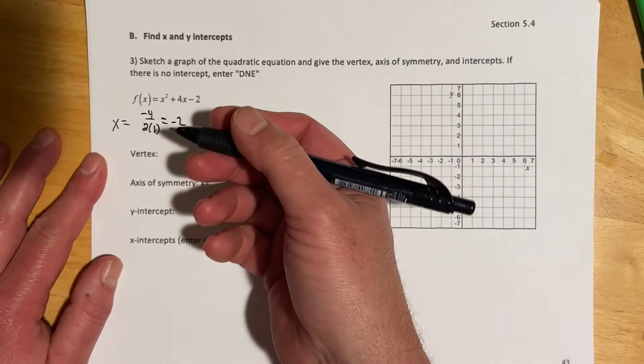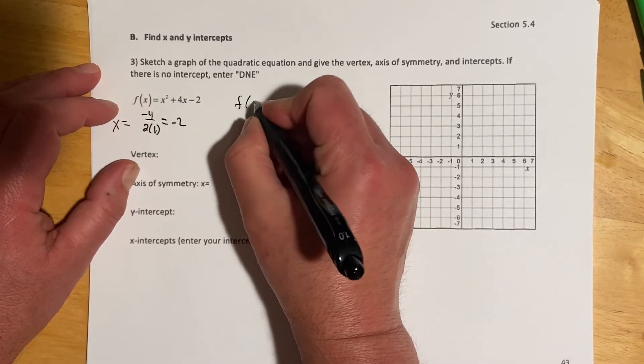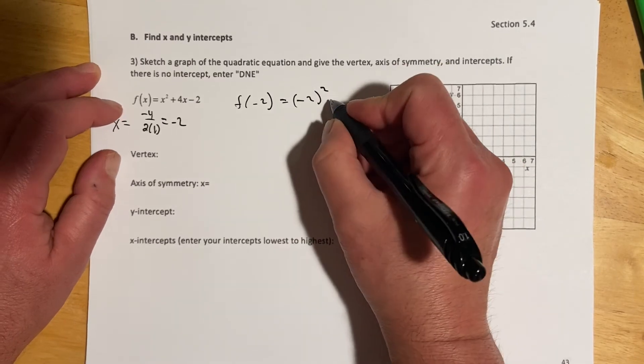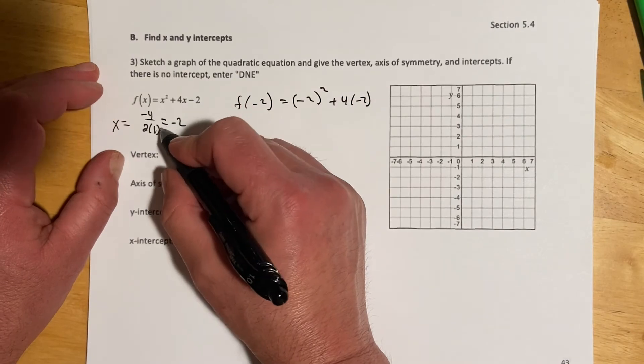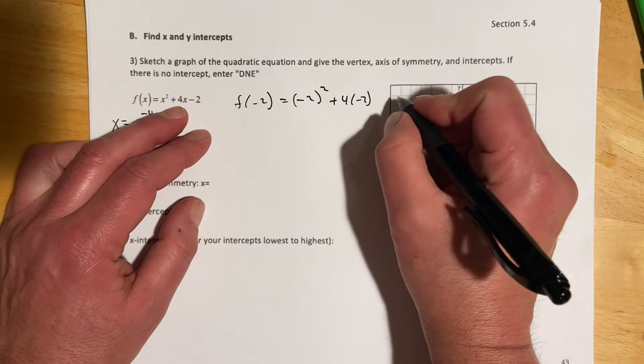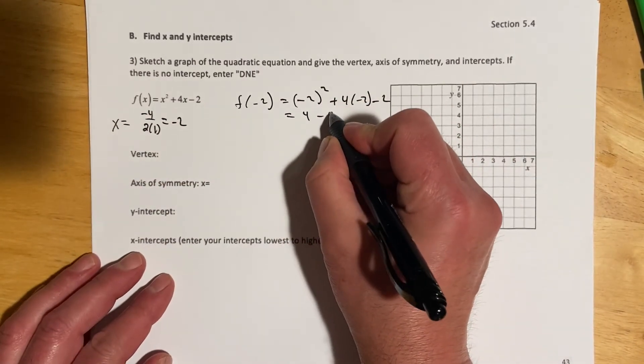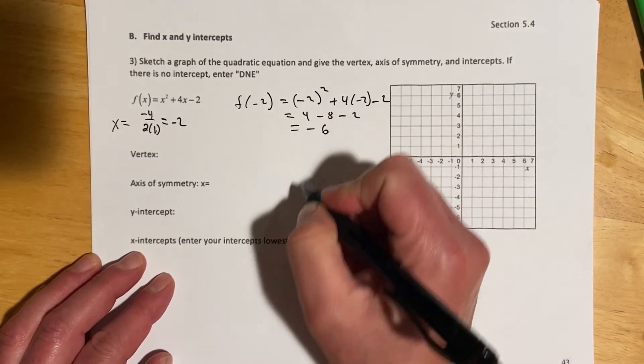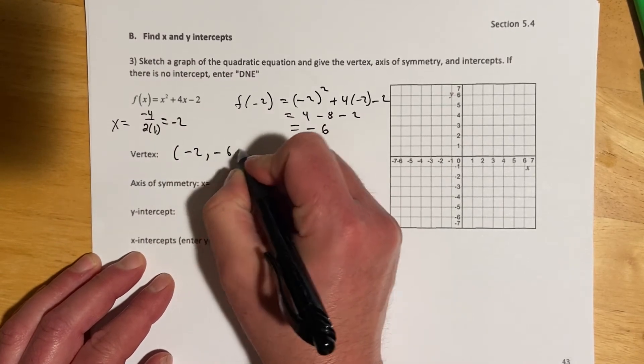So we get x equals negative b, so negative 4 over 2 times 1. So that makes negative 2. And then plug that back in, and we would get f of negative 2 squared, and then plus 4 times negative 2. And this time it's squared because x is negative 2, and x itself is being squared, so that means negative 2 times negative 2. And minus 2, so that would be 4 minus 8, and then minus 2, so that is negative 6. So our vertex is at negative 2, negative 6.